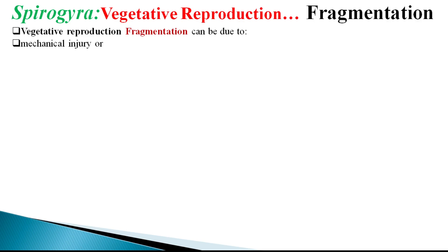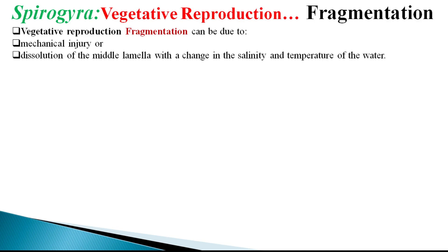Mechanical injury is caused by the bite of a fish or other aquatic animals, or by the actions of water currents. Fragmentation also takes place by the softening and subsequent dissolution of the middle lamella of the end walls, which is present between two cells of a filament.